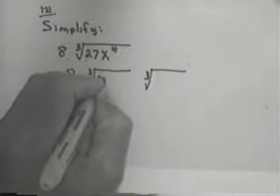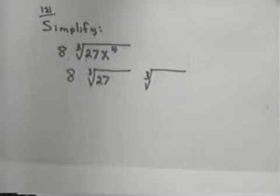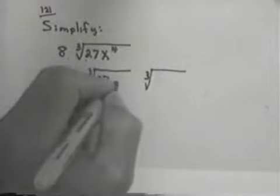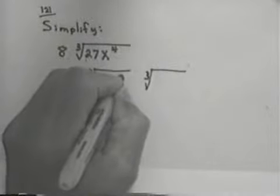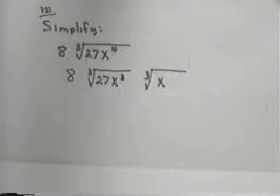27 is a cube, so I put the 27 with the cube. x to the 4th is not, so I write it as x cubed and x.